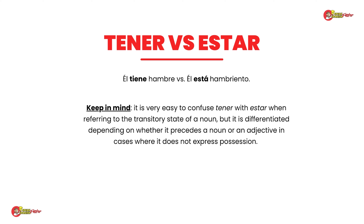Here's the second example: él tiene hambre versus él está hambriento. Él tiene hambre — he has hunger, which translates to 'he is hungry.' But you can't say él está hambre or él tiene hambriento. So you say either él tiene hambre or él está hambriento. I would say keep it simple — when you want to talk about somebody being hungry or thirsty, use the verb tener: yo tengo sed, yo tengo hambre.